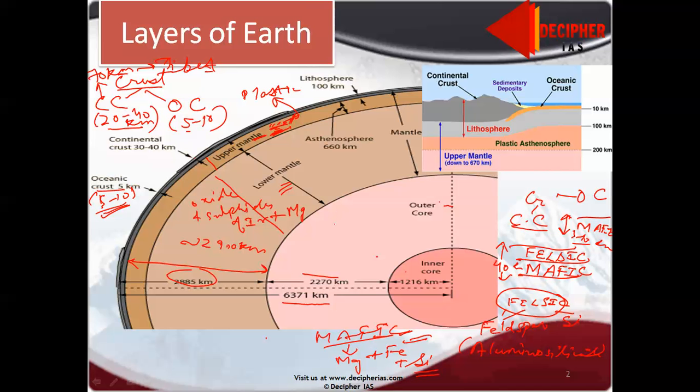Coming to the core, outer core is liquid and inner core is solid. Outer core is liquid because temperature dominates pressure of the mass above. Inner core is solid because pressure dominates over temperature.